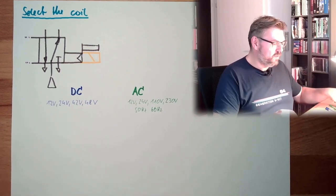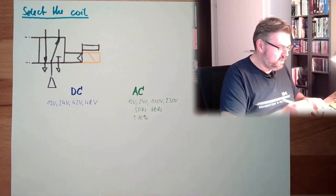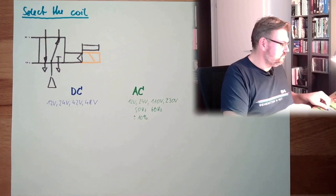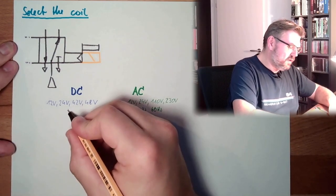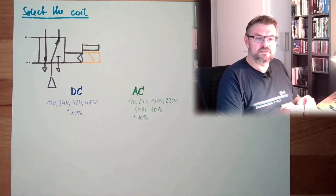the voltage might be plus minus 10 percent. That's a usual limit of voltage. Also on DC, plus minus 10 percent. Very, very usual tolerance, voltage tolerance.